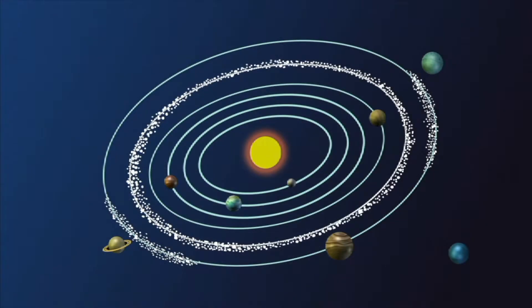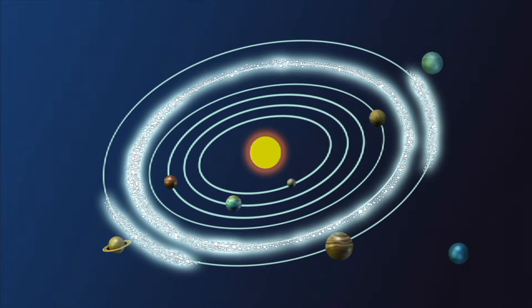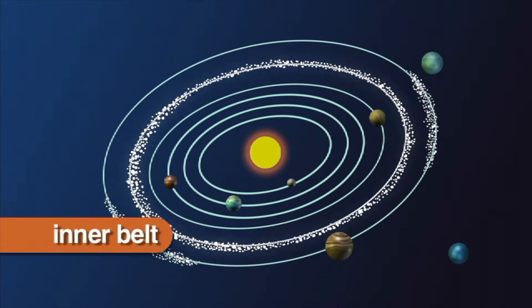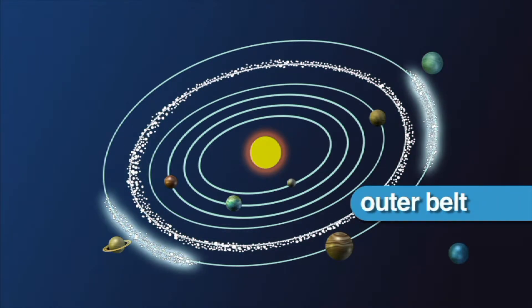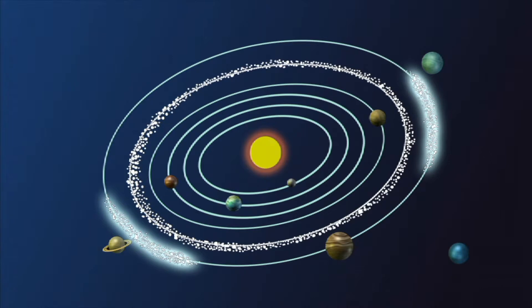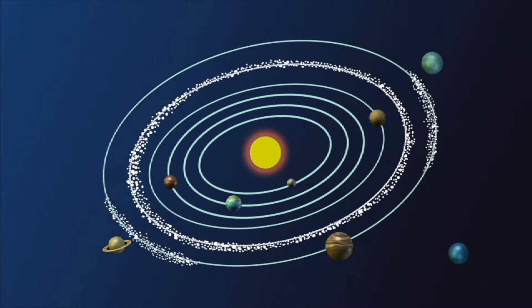The asteroid belt is divided into an inner belt and an outer belt. The inner belt, which is closer to the sun, contains asteroids that are made of valuable metals. The outer belt, which is farther from the sun, contains asteroids made out of rocky material. These asteroids appear darker than asteroids in the inner belt.